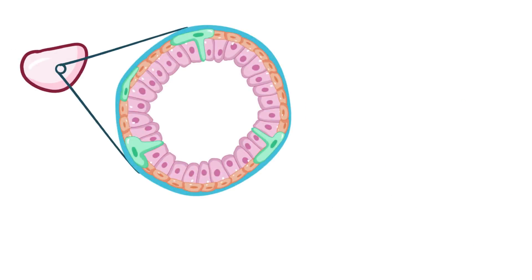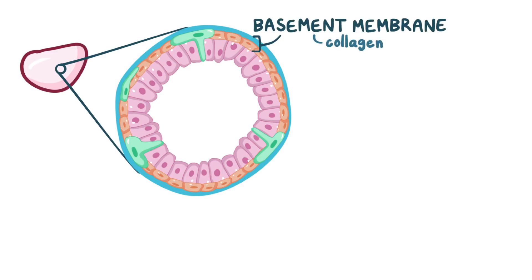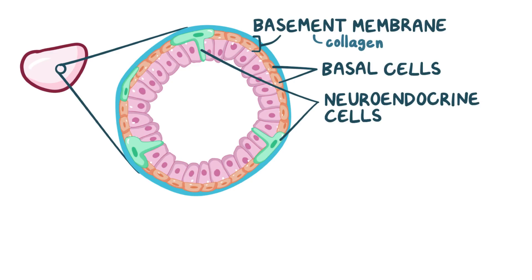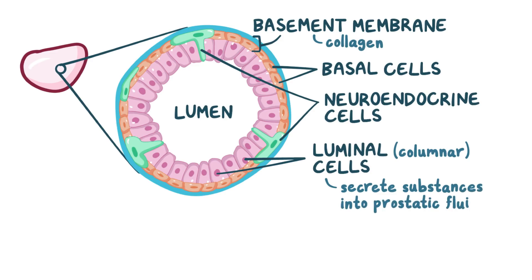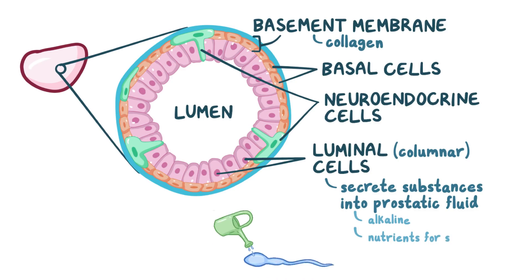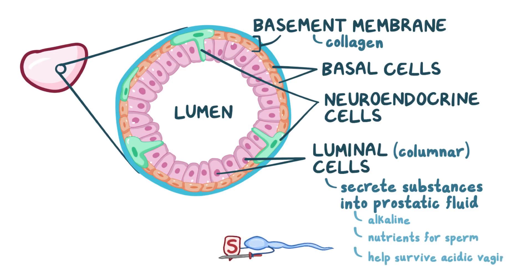At the microscopic level, each of the tiny glands that make up the prostate is surrounded by a basement membrane made largely of collagen. Sitting within that basement membrane is a ring of cube-shaped basal cells, as well as a few neuroendocrine cells interspersed throughout. Finally, there's an inner ring of luminal columnar cells, which are within the lumen or center of the gland. Luminal cells secrete substances into the prostatic fluid that make it slightly alkaline and give it nutrients which nourish the sperm and help it survive in the acidic environment of the vagina.